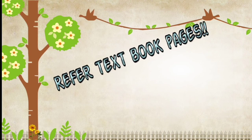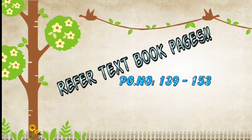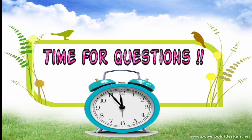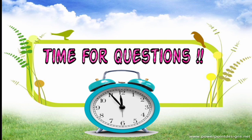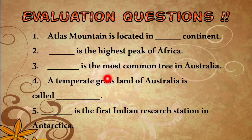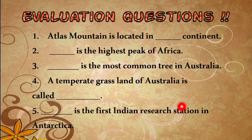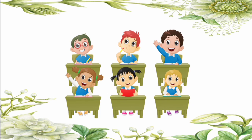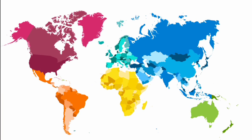We have come to the end of today's session. Today's topic is covered from textbook pages 139 to 153, completing the 'Exploring Continents' lesson. Evaluation questions: Which continent is the Atlas Mountain located in? Which is the highest peak of Africa? Which is the most common tree in Australia? What is the temperate grassland of Australia called? Which is the first Indian research station in Antarctica? Try to answer these in your social science notebook. Thank you.